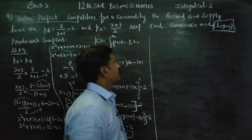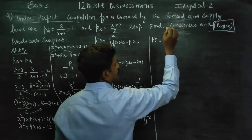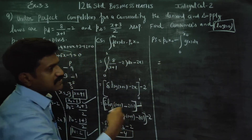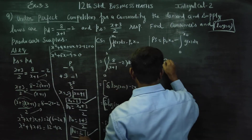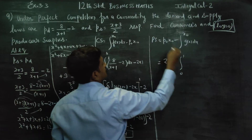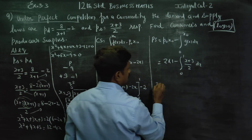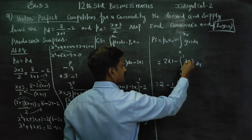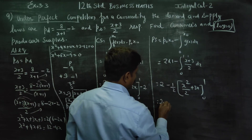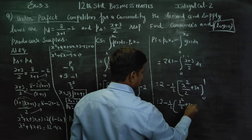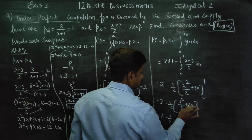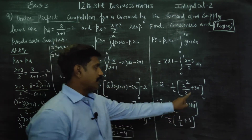Now coming to the producer surplus. Producer surplus equals P0·x0 minus integration from 0 to x0 of g(x) dx. Here P0 is 2 and x0 is 1. The supply function g(x) equals (x + 3)/2. So we integrate (x + 3)/2 dx from 0 to 1, giving 1/2 times the integral.